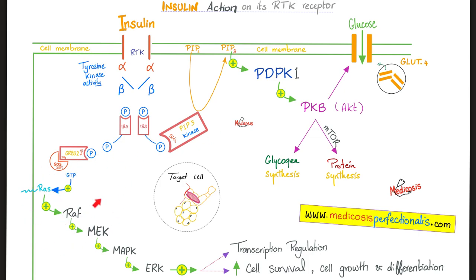The second story is the story of RAS. After you phosphorylated the IRS — insulin receptor substrate — you will phosphorylate GRB2, and then activate SOS. GTP is going to activate RAS; RAS activates RAF; RAF activates MEK; MEK activates MAPK; MAPK activates ERK. ERK will cause transcription and increased cell survival — growth and differentiation — which is true whether we're talking about insulin or cancer.